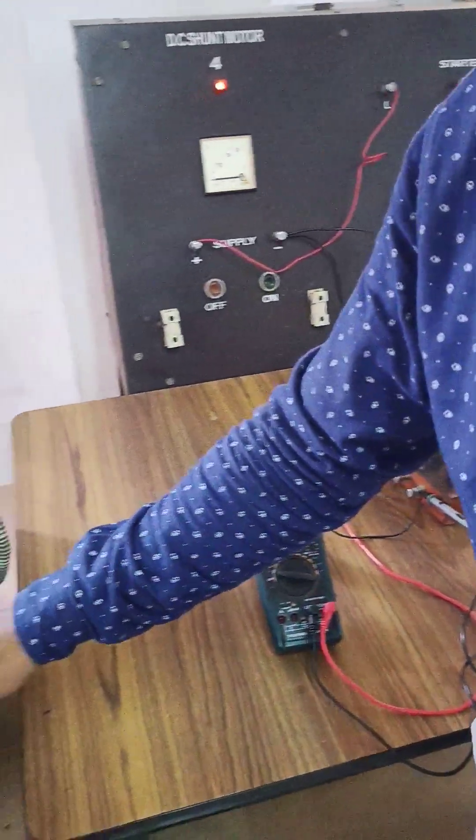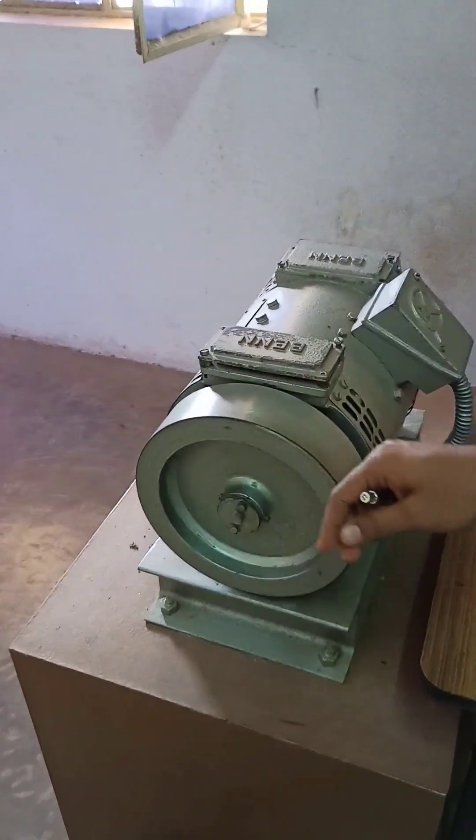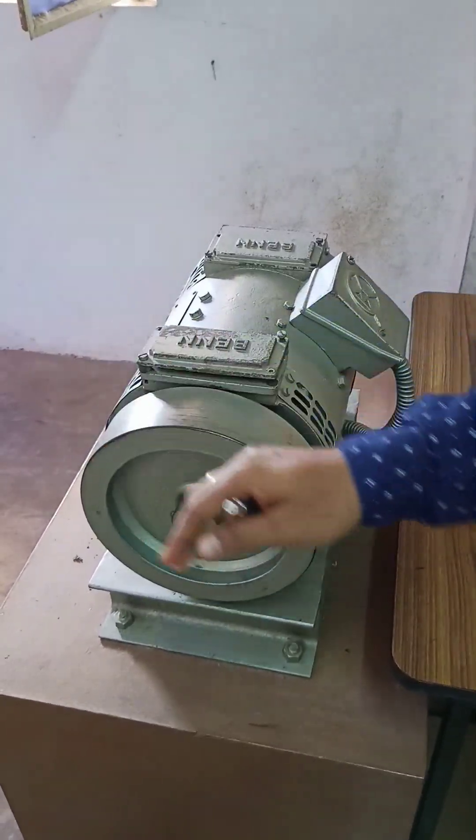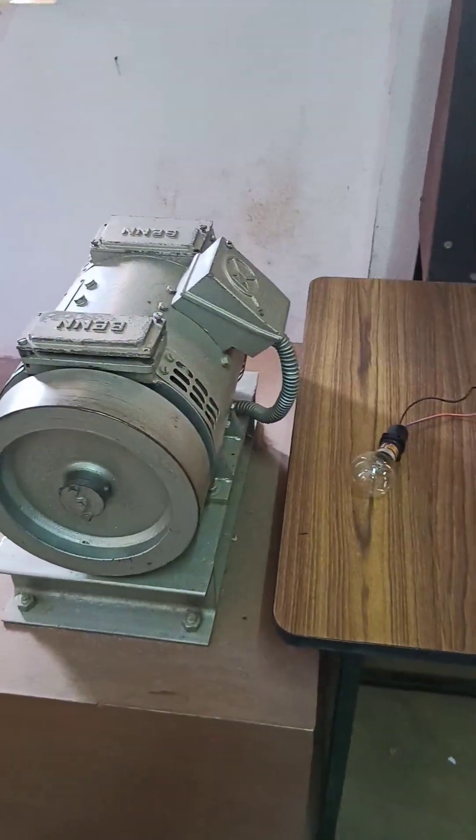The DC motor consists of the rotor which is nothing but the armature and the stator which is nothing but the field winding.